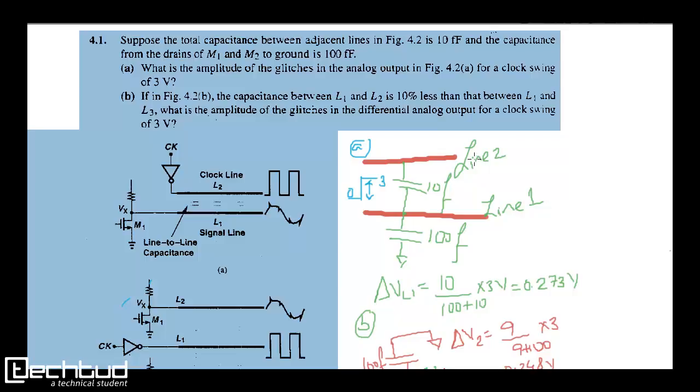So the capacitance between adjacent lines is given as 10 femtofarad. Now you have to determine what glitches you will get at the other end. Suppose this is one problem with resistance, transmission line, and signal line. One clock is passing through it, and it will be passing some glitches during on and off transitions. If any digital pulse passes, glitches are observed at the other end. So we are trying to find out what amount of glitch you can get.